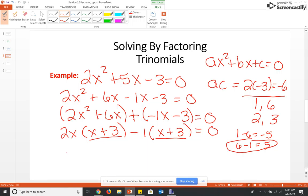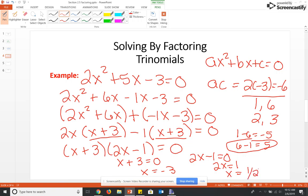So we're going to pull out the X plus 3. And if you take the X plus 3 out of the first term, you're left with 2X. And if you take it out of the second term, you're left with minus 1. And we finally have this thing completely factored and set equal to 0. Then we're going to take each factor and set equal to 0. And for the first one, we subtract 3, we get negative 3. Here, we're going to add 1 and divide by 2, so we get X equal 1 half.